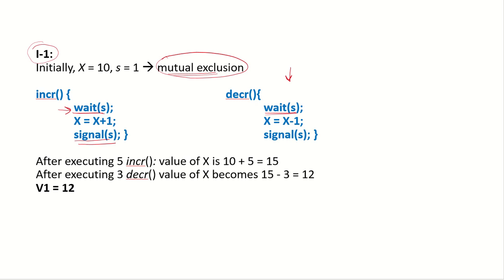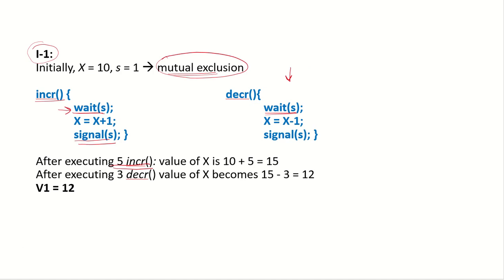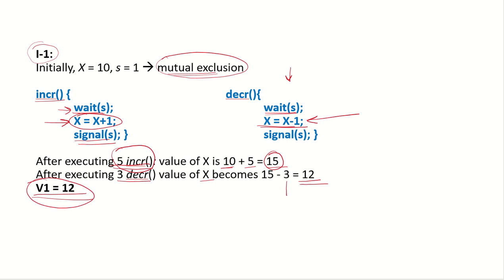Since execution is sequential, the 5 increment calls and 3 decrement calls run one at a time in whatever order. Each increment call increases x by 1, so after 5 increments starting from 10, x becomes 15. Then 3 decrement calls each decrease x by 1, so x becomes 15 minus 3 = 12. Therefore the final value v1 = 12.